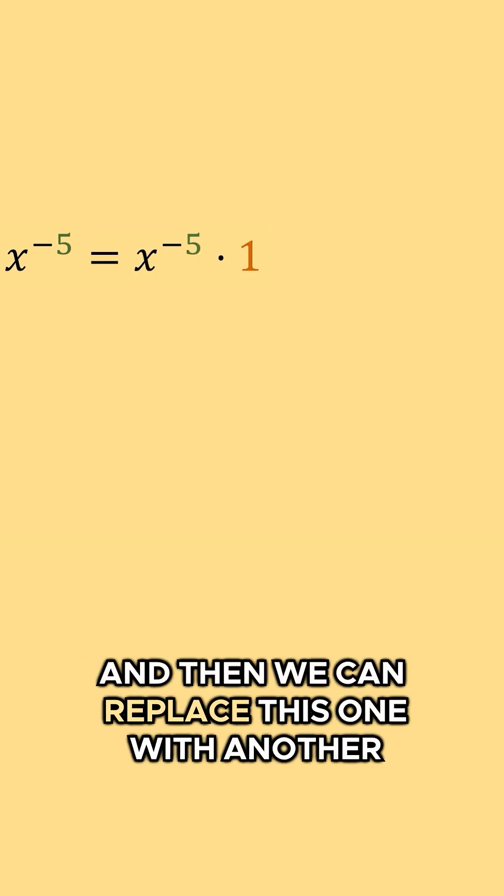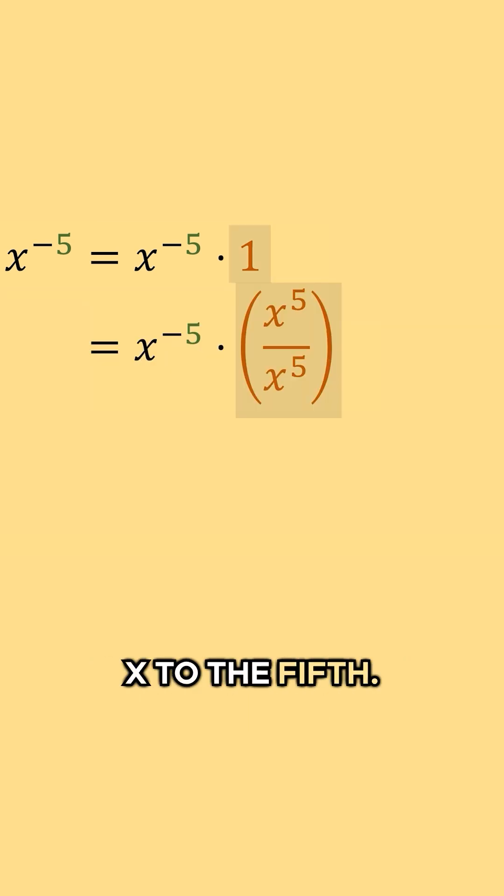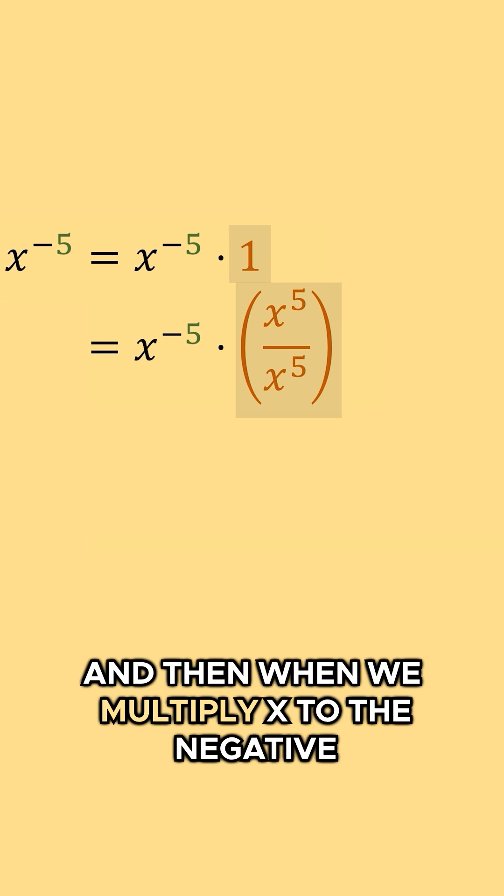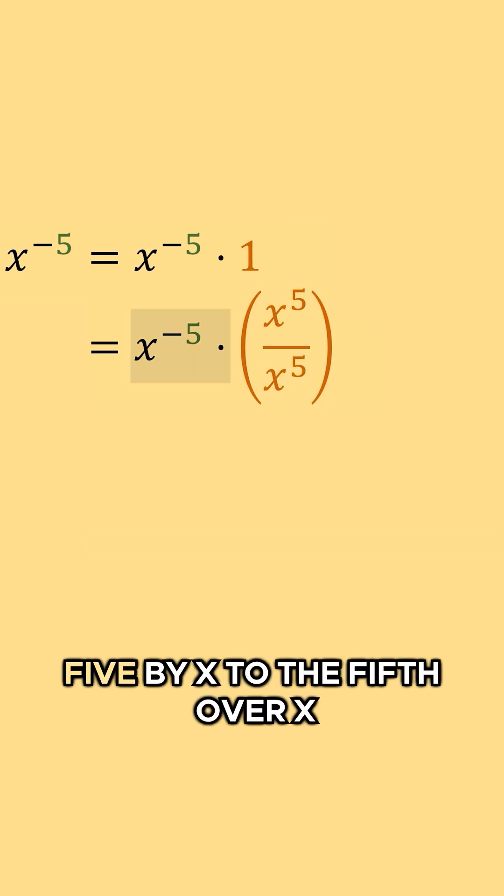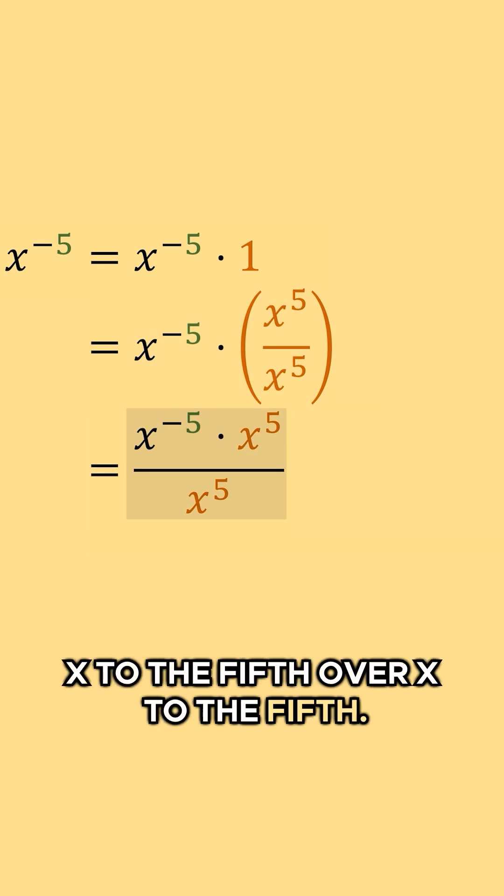And then we can replace this one with another form of one, let's say x to the fifth over x to the fifth. And then when we multiply x to the negative five by x to the fifth over x to the fifth, we get x to the negative five times x to the fifth over x to the fifth.